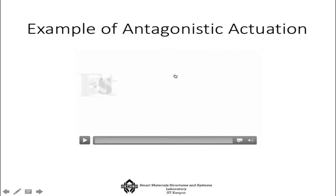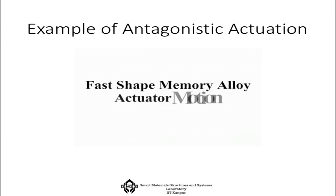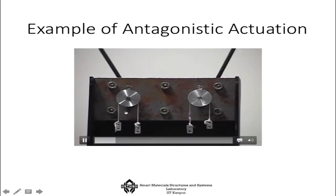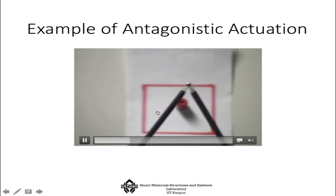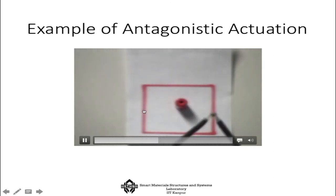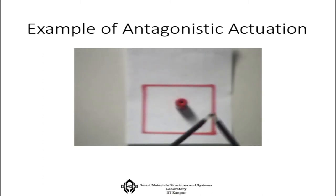We can apply this antagonistic actuation concept using shape memory alloys. Here is an example where people have developed a shape memory alloy-based system demonstrating agonist and antagonist motions — whichever is pulling is the agonist and the other is relaxing as antagonist. You can see the nice rectangular trajectory that it creates. By varying these pairs' motion you can do it faster or slower.